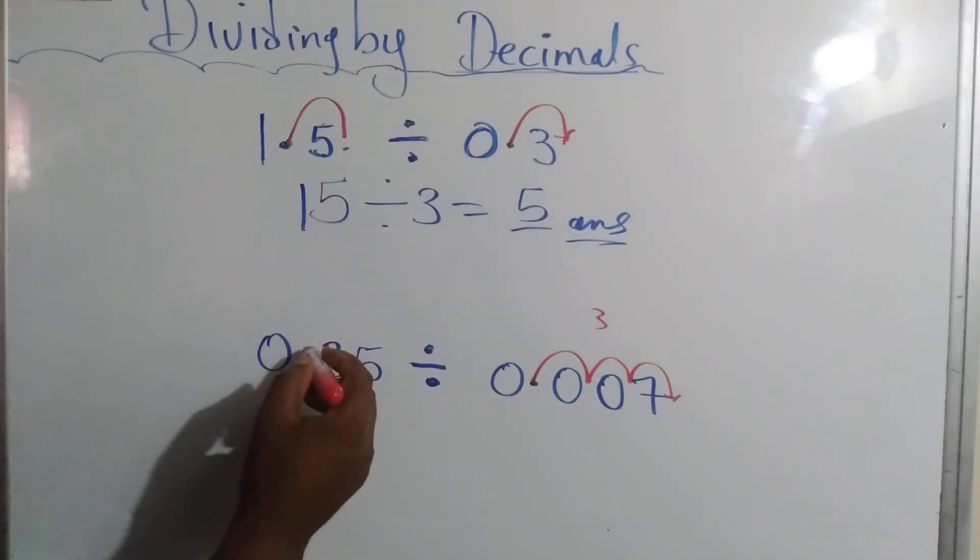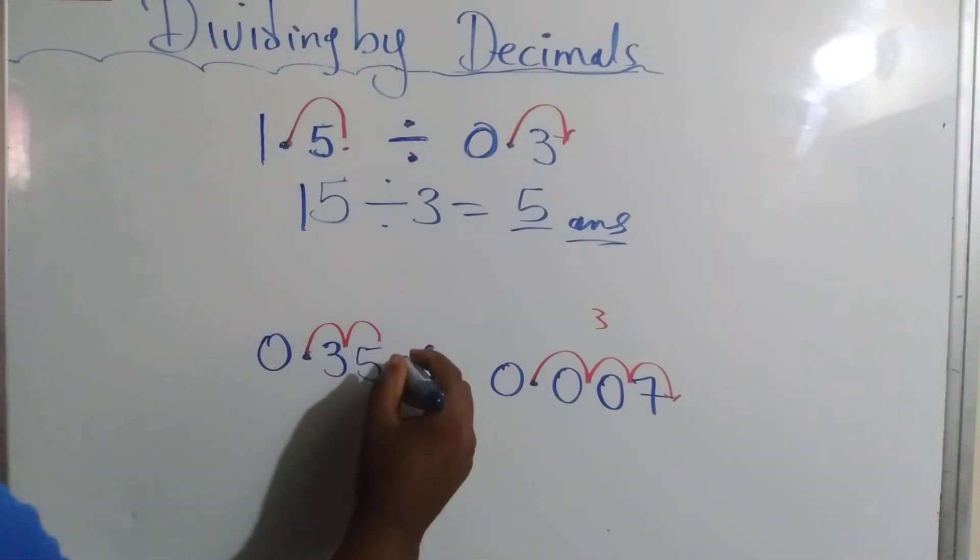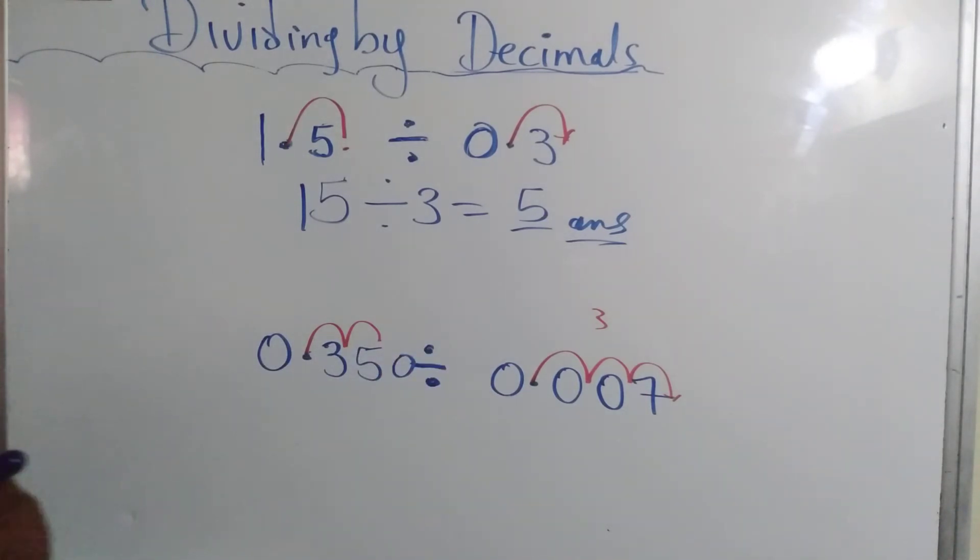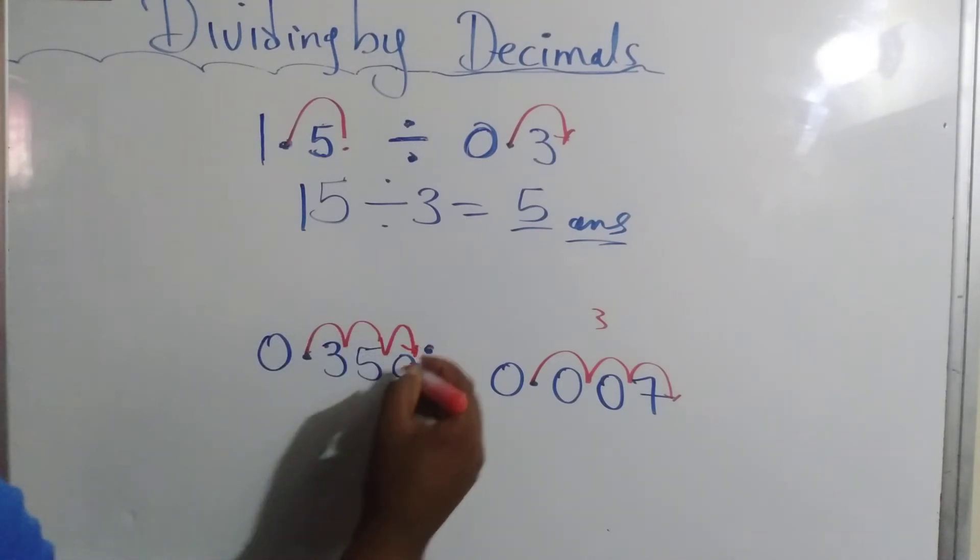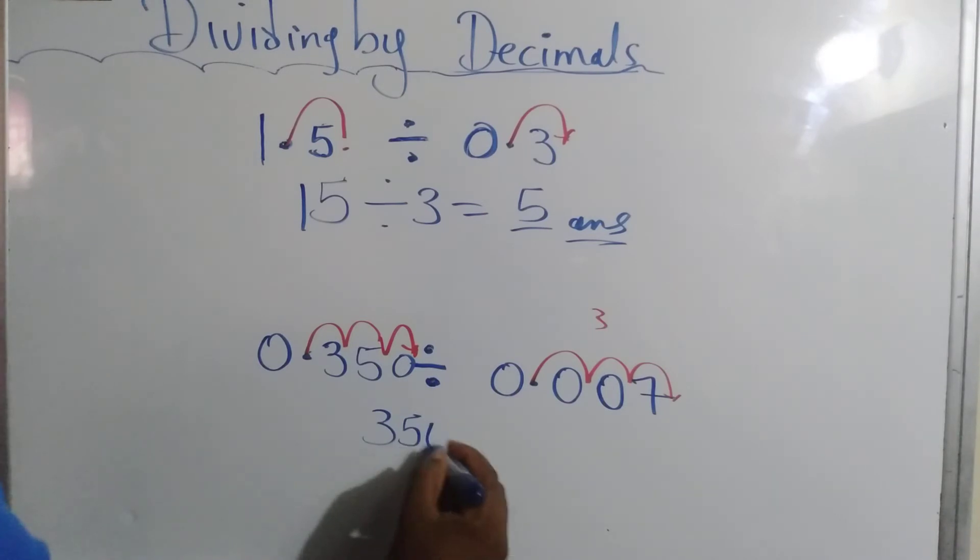We have to do the same here. 1, 2. So we don't have this. So we're going to put another 0. So that becomes 3 now. So now, we have 350. So let's add a 0. 350 divided by 7. And that would give us 50.